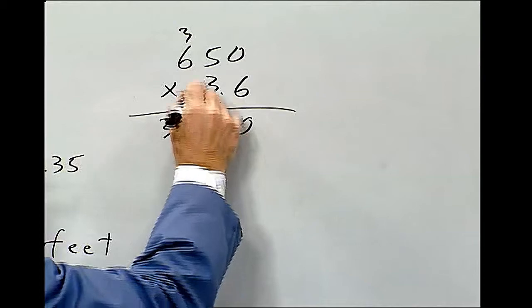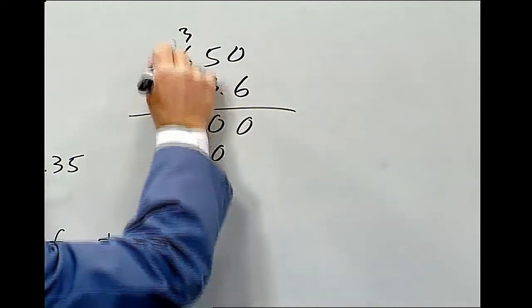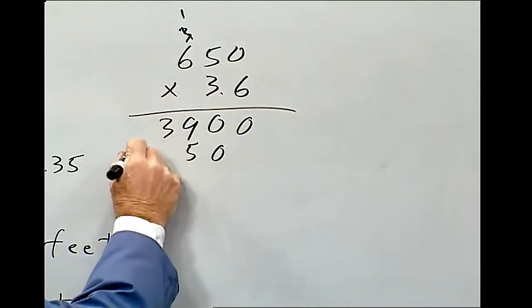3 times 0 is 0. 3 times 5 is 15. 3 times 6 is 18, so it's 19.